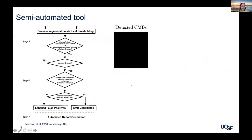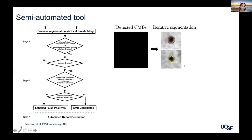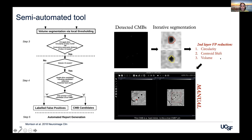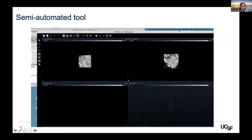From the detected CMB mask output, we applied an iterative segmentation process using standard thresholding, then a second layer of false positive reduction to eliminate as many false positives as possible before feeding all candidate microbleeds into a GUI. We use iMagine, an open-source tool available for MATLAB, to present the user with candidate microbleeds so they can decide whether each is a false positive or a true microbleed.